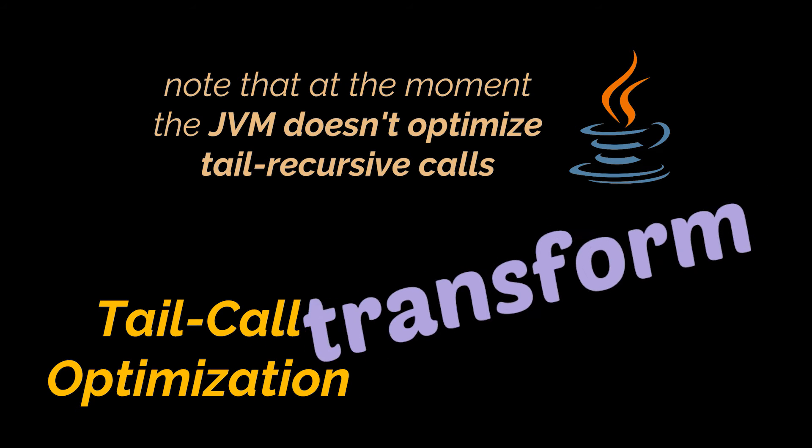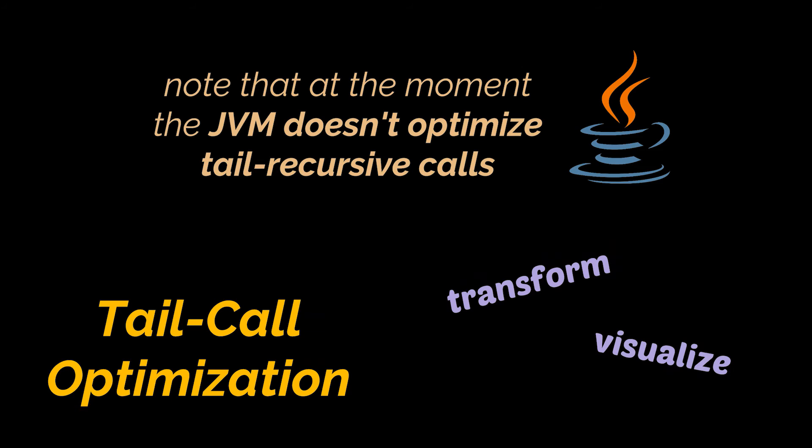Okay, to explain tail recursion further and make things clearer, let's try to transform our previously implemented head recursive method into a tail recursive one. Then we'll go ahead and visualize the stack memory of each of those methods when they are executed.